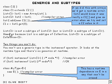So what I'm saying here basically is that list of C1 is not a subtype of list of C2, and it's certainly not the other way around.